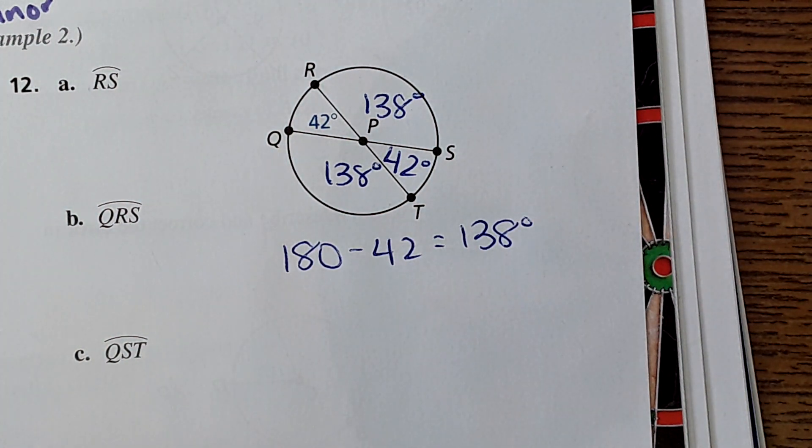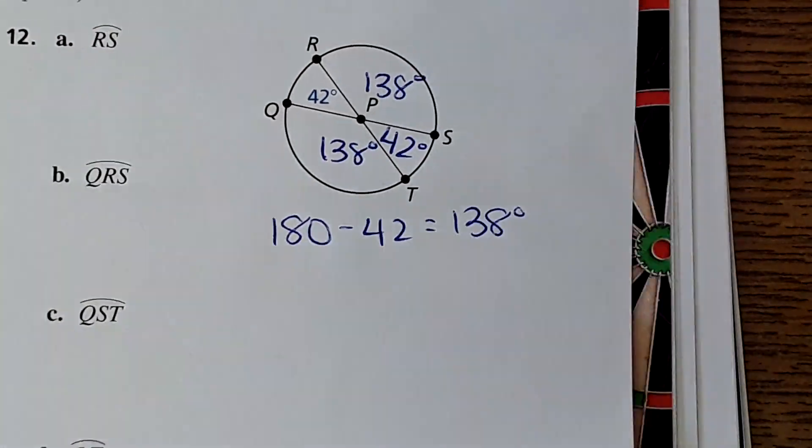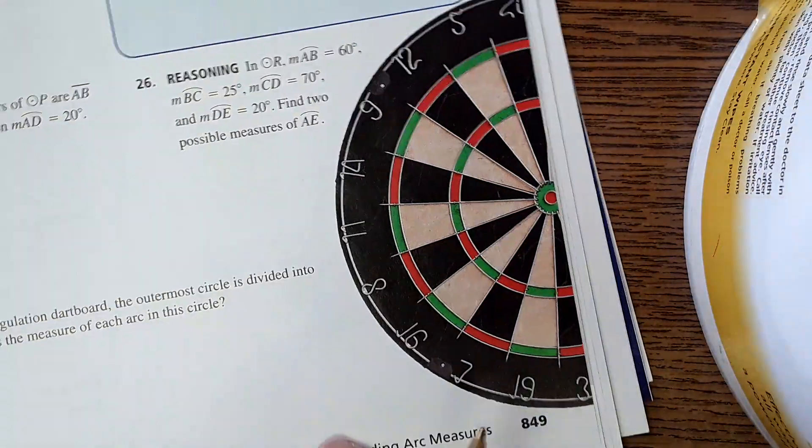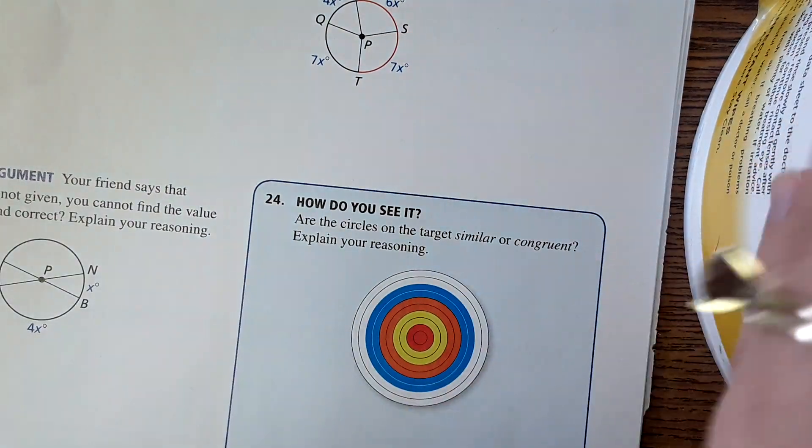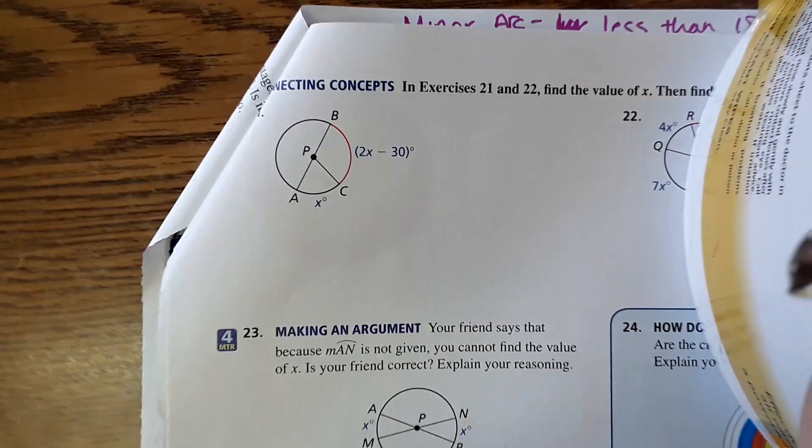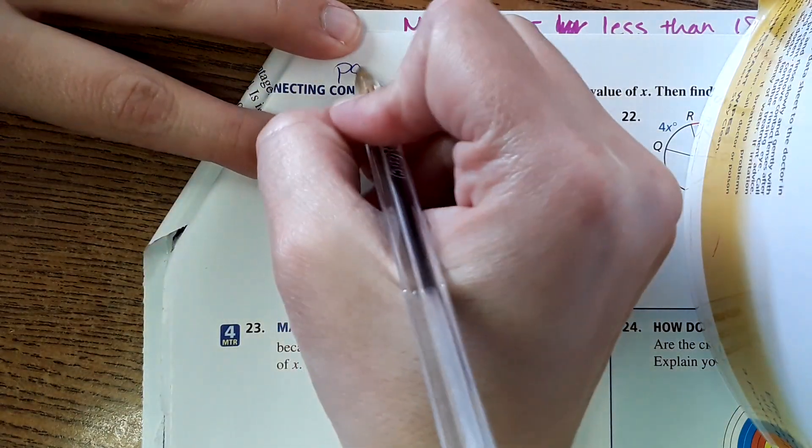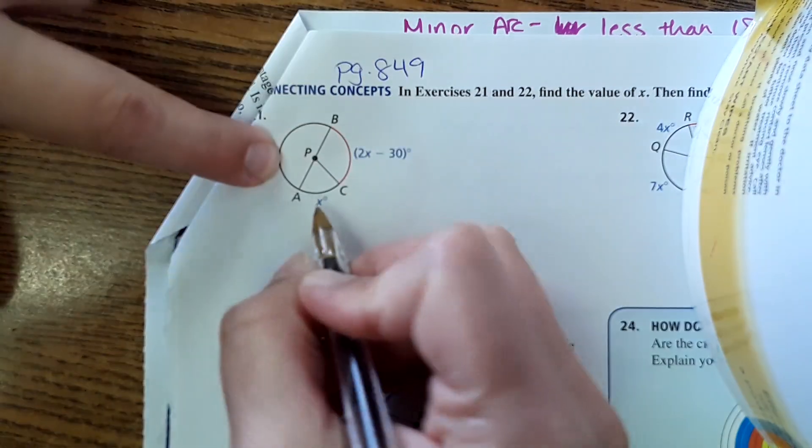Okay, now we're going to flip the page. We're actually not going to do any of the examples on the back here, we're going to switch up to the top of 849, so this is page 849, this first example here.